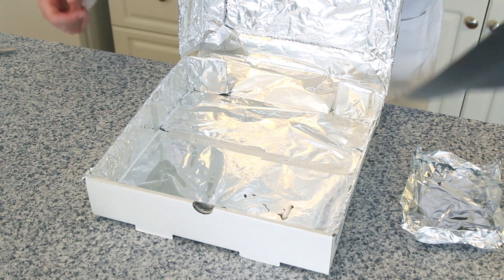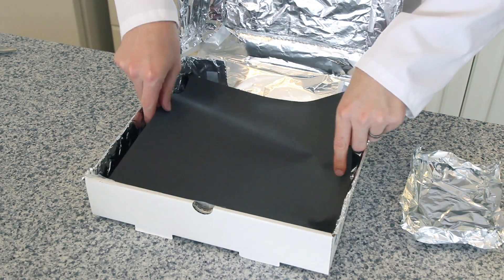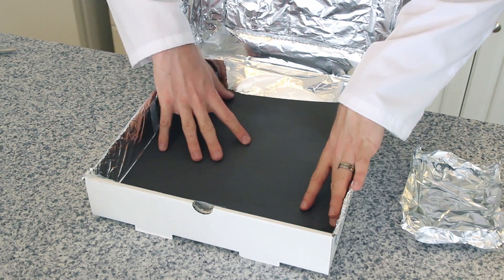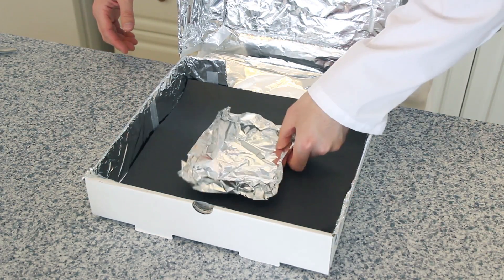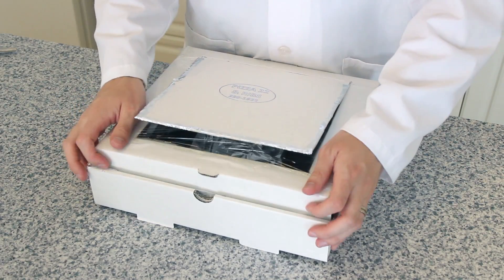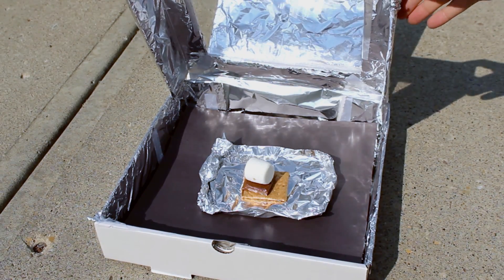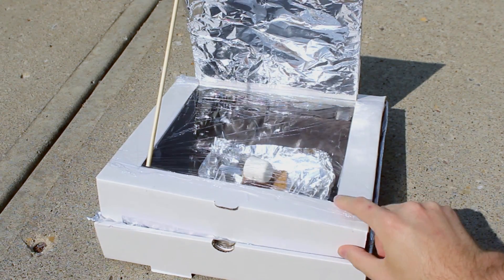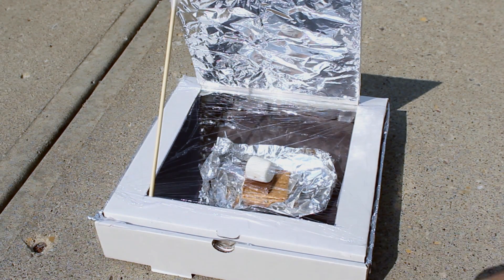While the first s'more cooks, we built a second solar oven to test out if adding black paper to the inside of the solar oven would make a difference in the oven's air temperature. We then took the oven outside, placed a s'more into the oven, sealed it up, and left it in the sun.